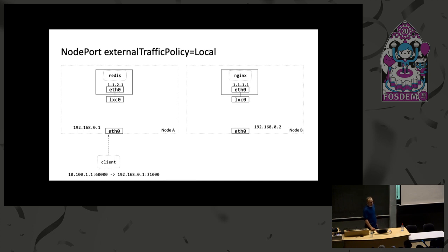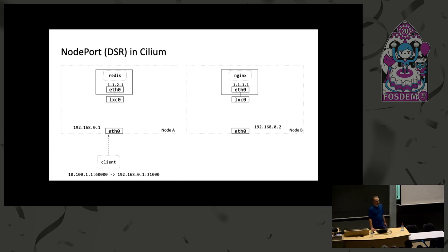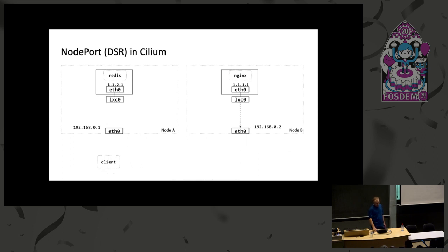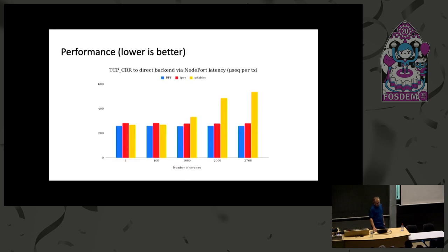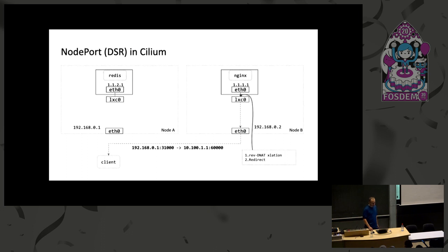There's also External Traffic Policy Local in Kubernetes, where you specify that only backends local to the node are used, avoiding the extra hop. We recently merged Direct Server Return in Cilium: when a service tries to connect to a remote backend, we encode the service IP so the backend can rewrite packets with the original service IP as the source and reply directly to the client without going back to the other node for the extra hop. All of this happens inside BPF without any other dependencies.